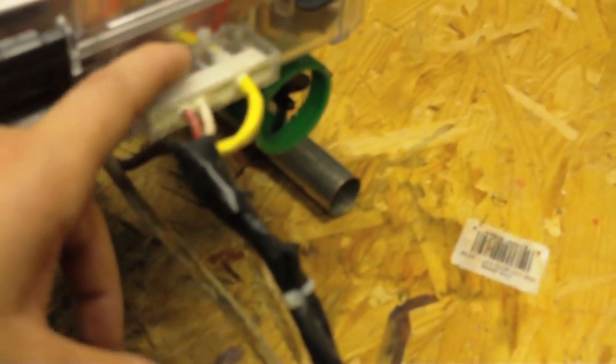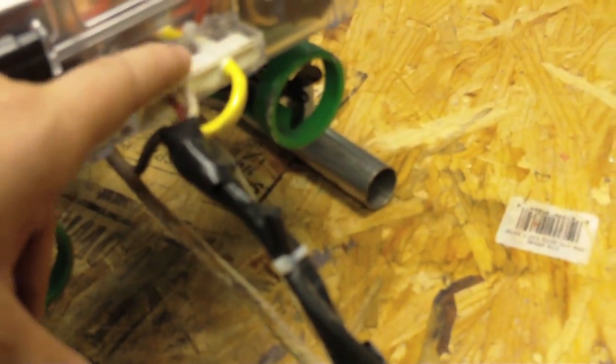And then the wires come out through this, it's like a trough that I milled, a big trough. Wires come out and this is sealed with epoxy. And this works very well. There's absolutely no leaks. Did the same on this side.